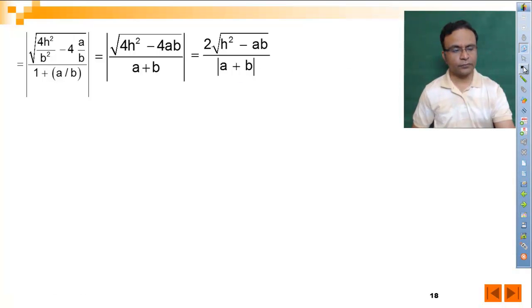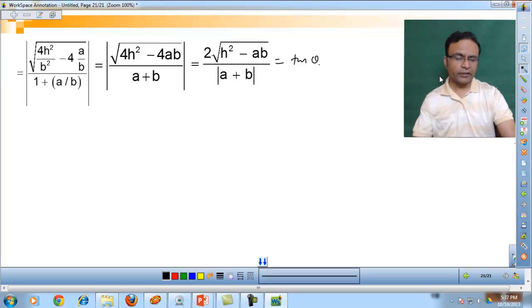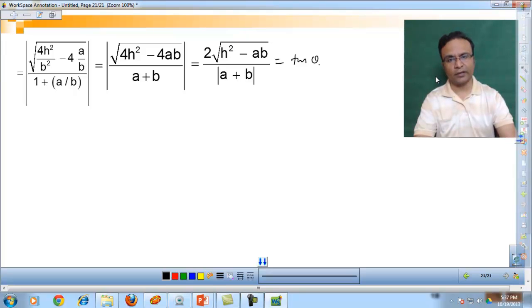This equals tan theta where theta is angle between pair of straight lines. So if we have to find the angle between pair of straight lines, we have three terms coefficients: x square, xy, and y square. These terms are second degree terms.